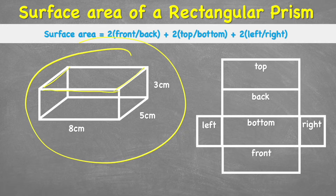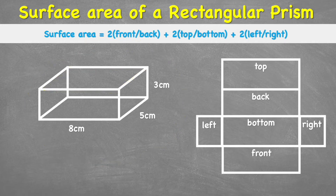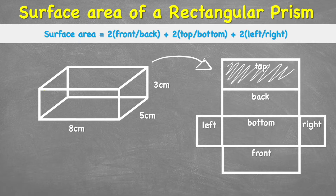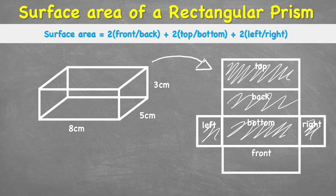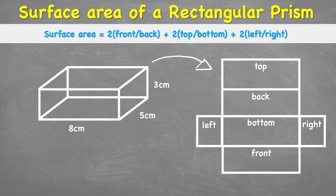We can see all these faces on this example here. The surface area is essentially what we get if we turn this shape into its net form — make it flat, make it a 2D shape — and measure the area it takes up on a surface. We're going to have to calculate all of the individual faces, but fortunately there is a formula to help us.